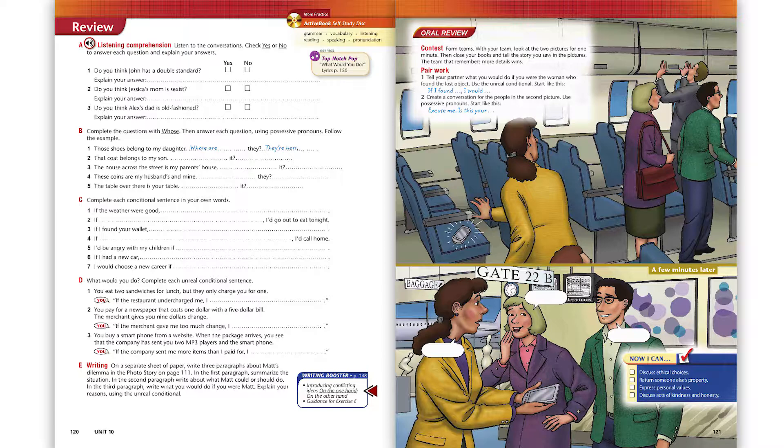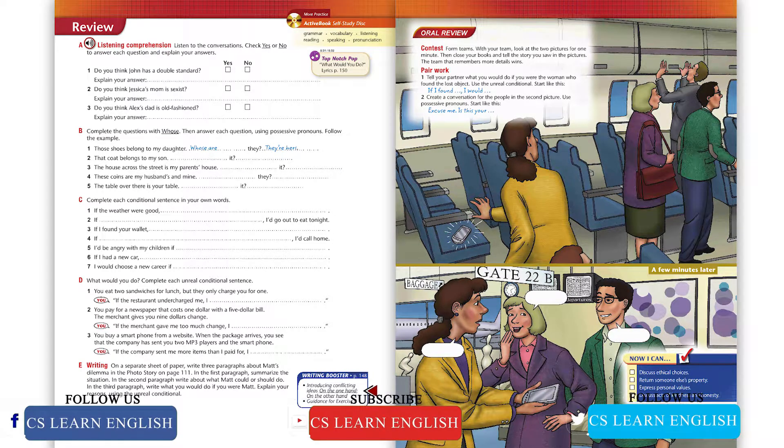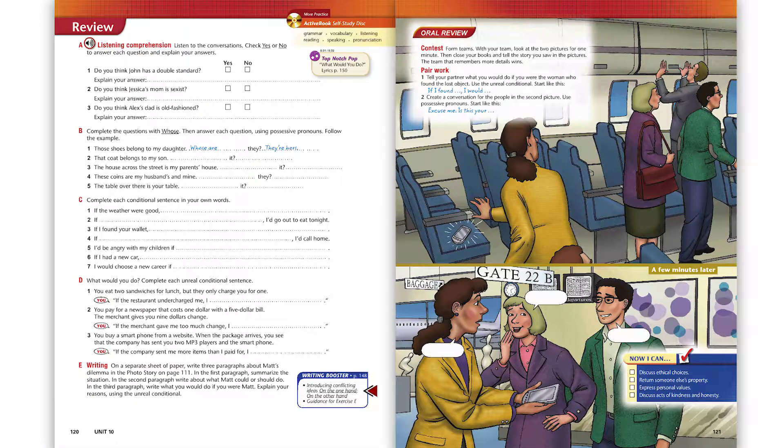'That kind of thing really impresses a young woman.' 'No offense Dad, but that's pretty old-fashioned. Allison is my age. Save that stuff for Mom, okay?' Top Notch Pop Song: What Would You Do? To read the lyrics and sing along, turn to the end of this book.